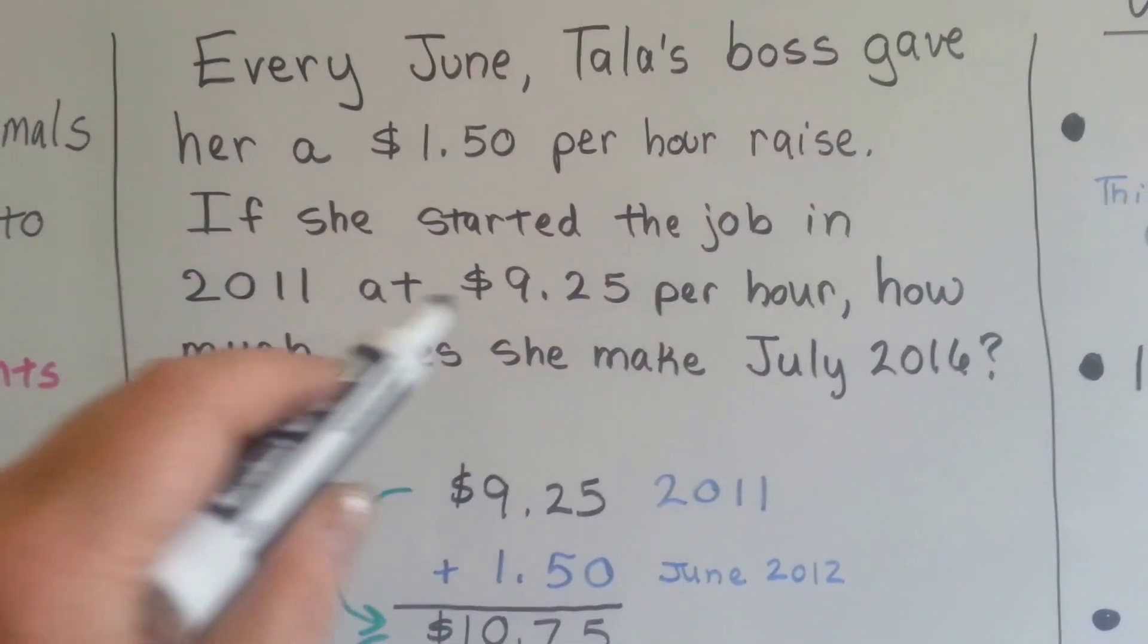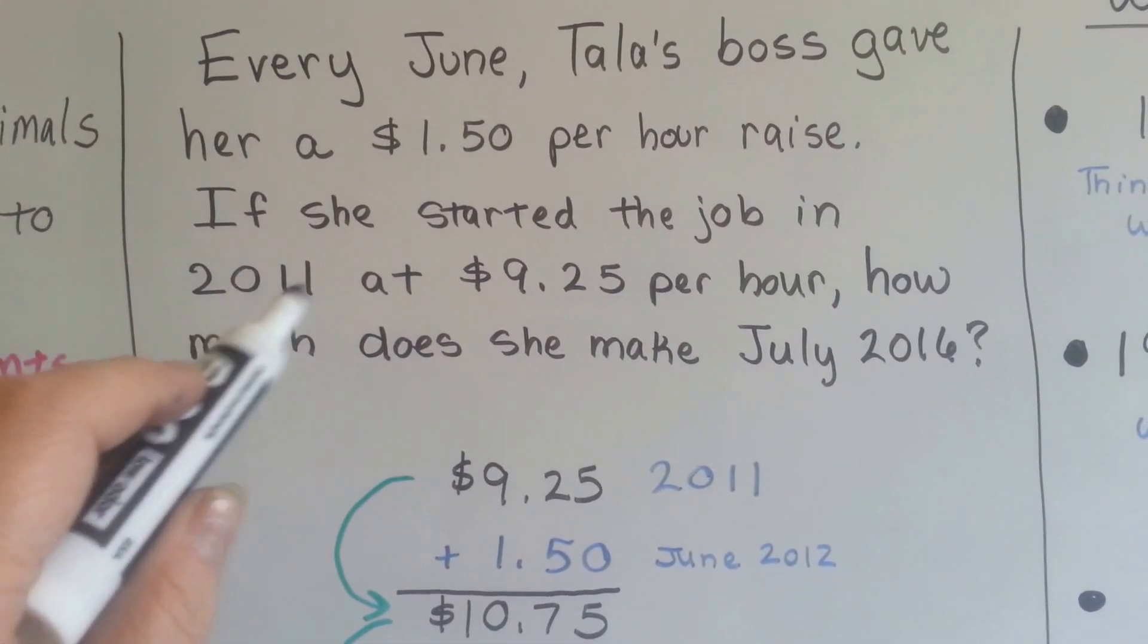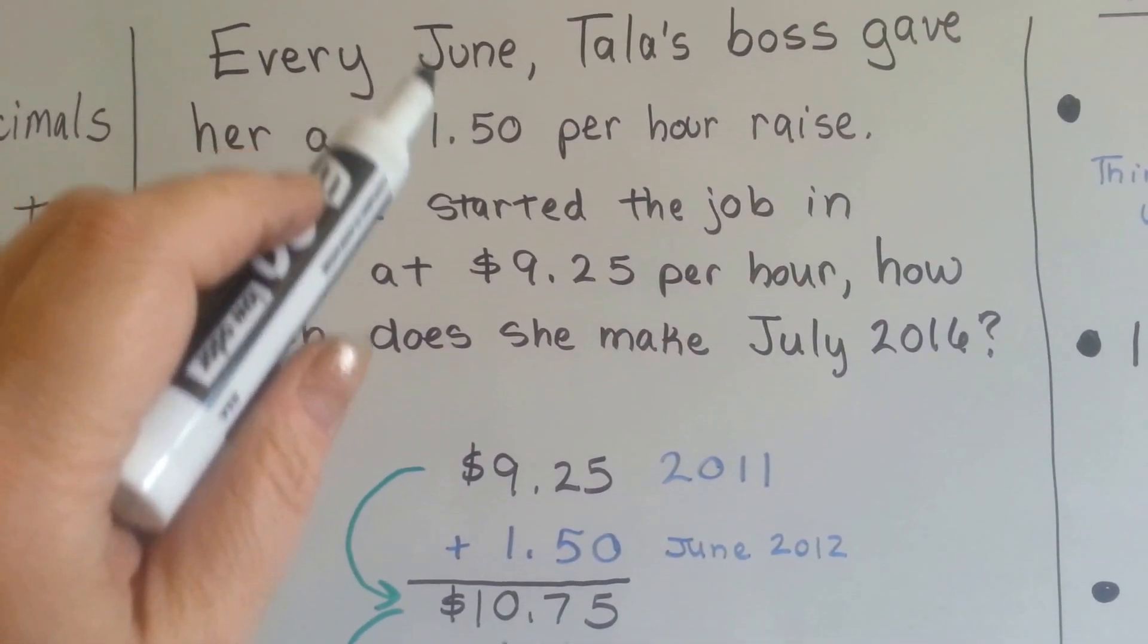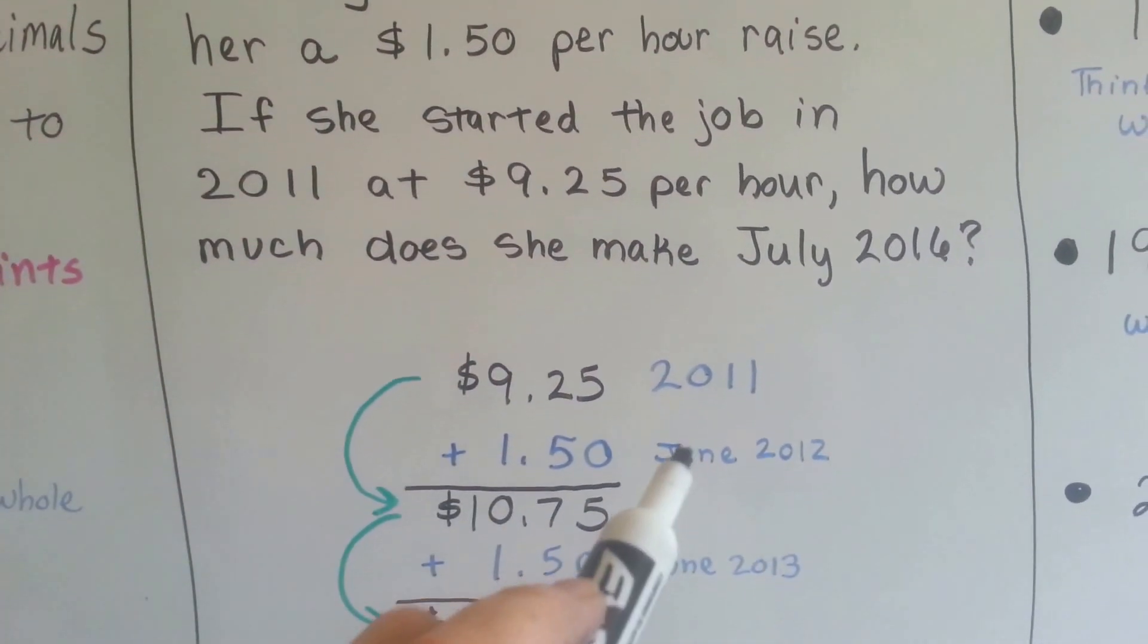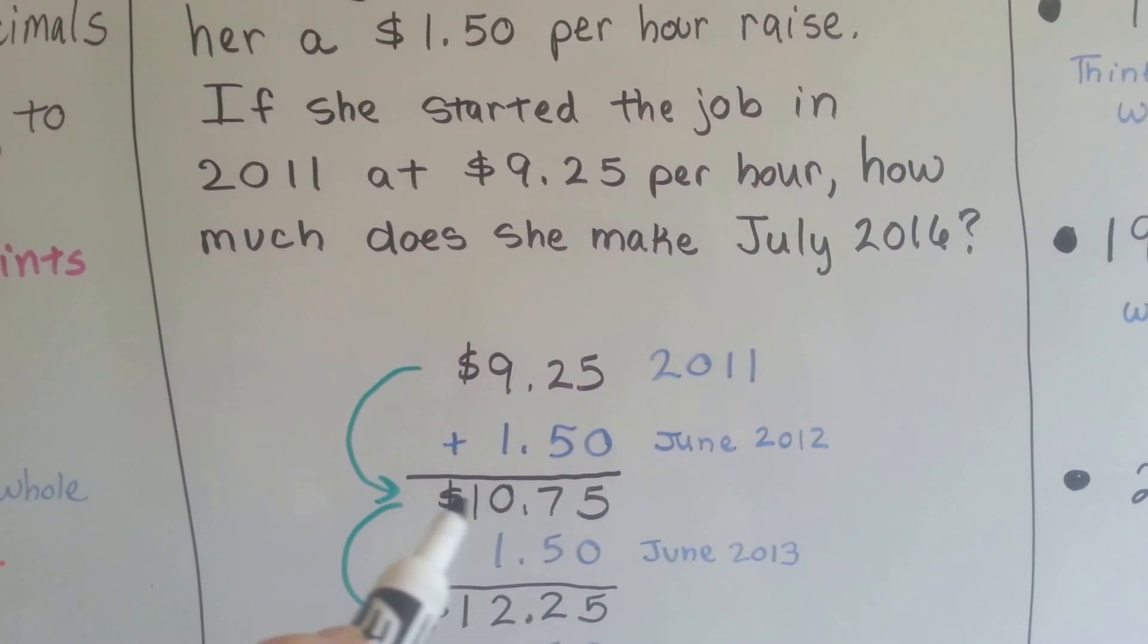Well, she started at $9.25 per hour in 2011, and we're going to go up by $1.50 every year. Every June, it says. So in June of 2012, she got a raise, and now she's making $10.75.